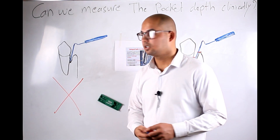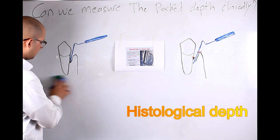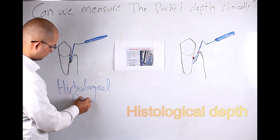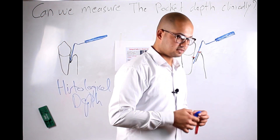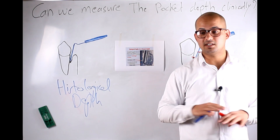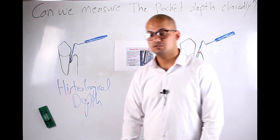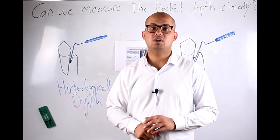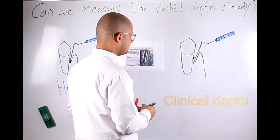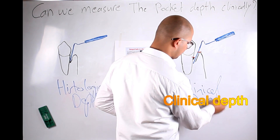That's why in the periodontal literature they use another term rather than 'pocket depth' — they use 'histological depth.' To measure histological depth, you must take a histological section; we can't measure it clinically at all because we always pass that point. What we measure with the periodontal probe is called 'clinical depth' or 'probing depth.'